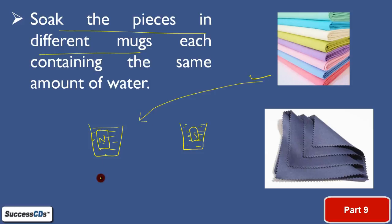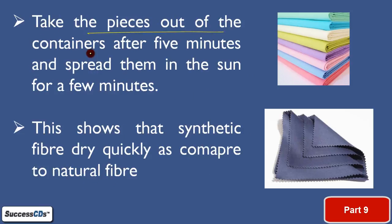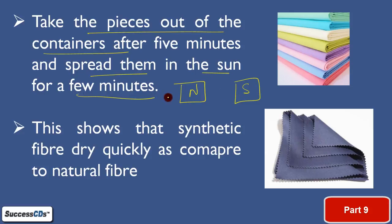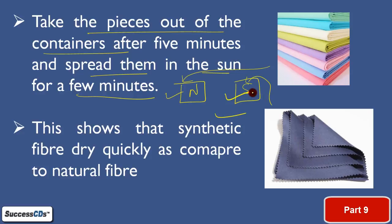Suppose the natural fiber piece is in one container and the synthetic fiber piece is in another. Then take the pieces out, spread them in the sun for a few minutes. Natural fiber is this, synthetic is this. When you spread them in the sun for a few minutes, you will see that synthetic fiber dries very quickly as compared to the natural fiber. This means water absorbing tendency is more in natural fiber and less in synthetic fiber — it readily loses water and gets dry faster.